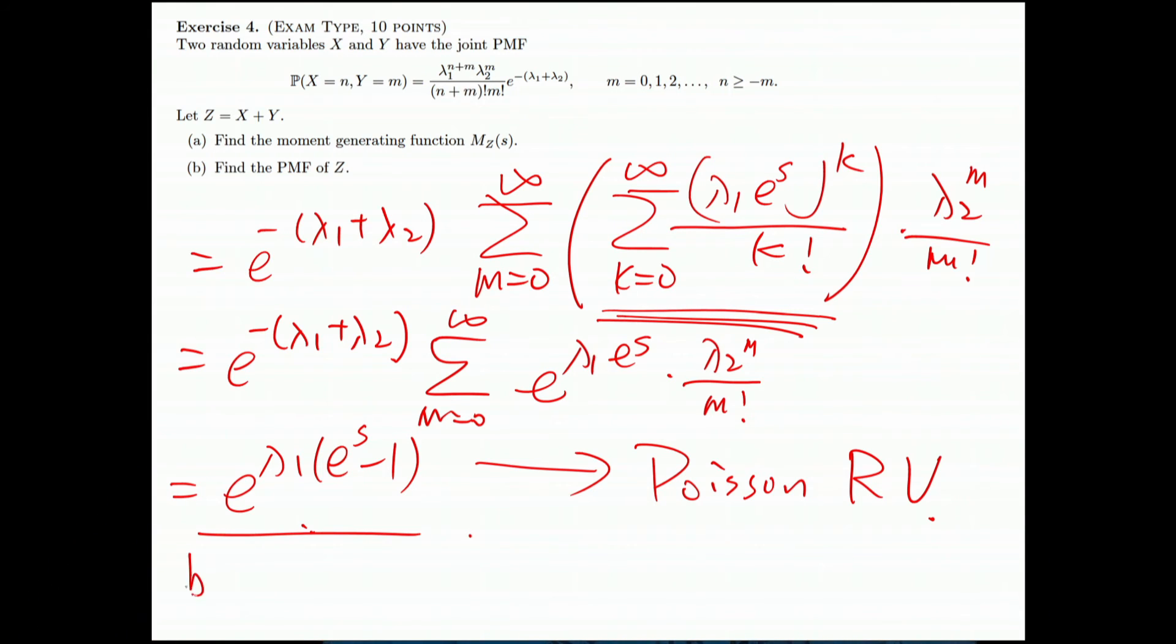Then part b: find the PMF of z. Since z is a Poisson random variable, the PMF will be like Poisson type, and the parameter is λ₁.